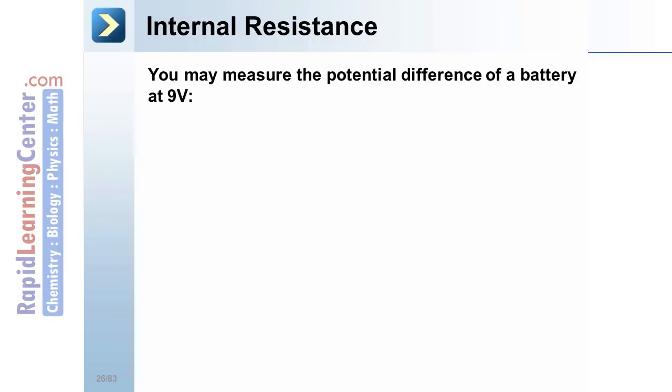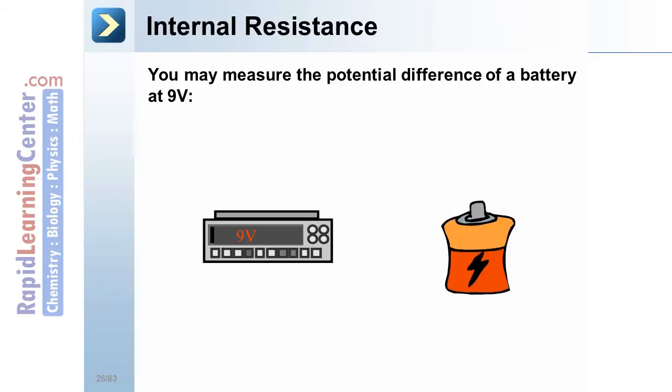Internal resistance. You may measure the potential difference of a battery at 9 volts. Here's your battery. You may measure it with a device and obtain a reading of exactly 9 volts.